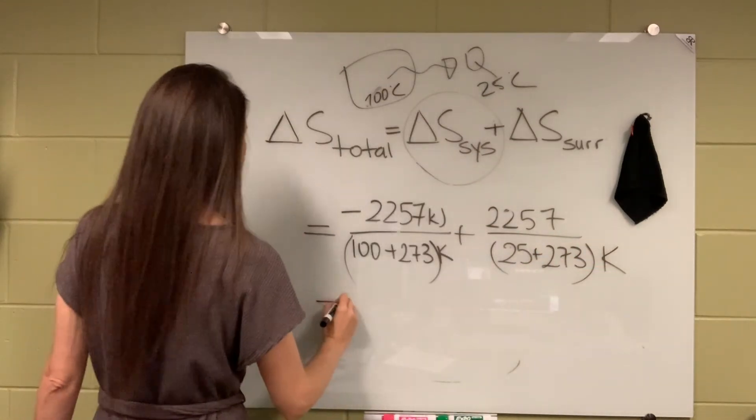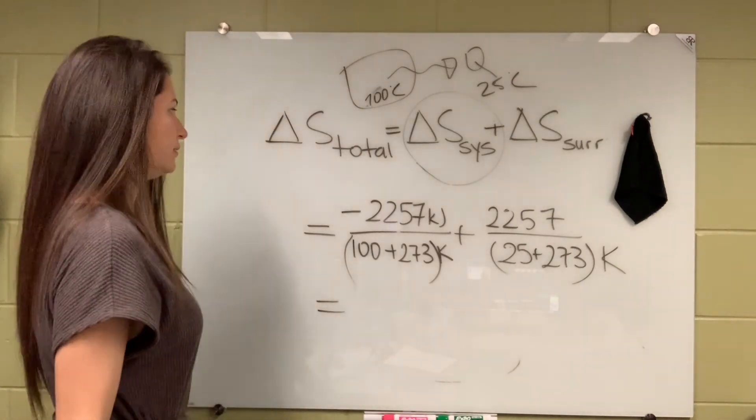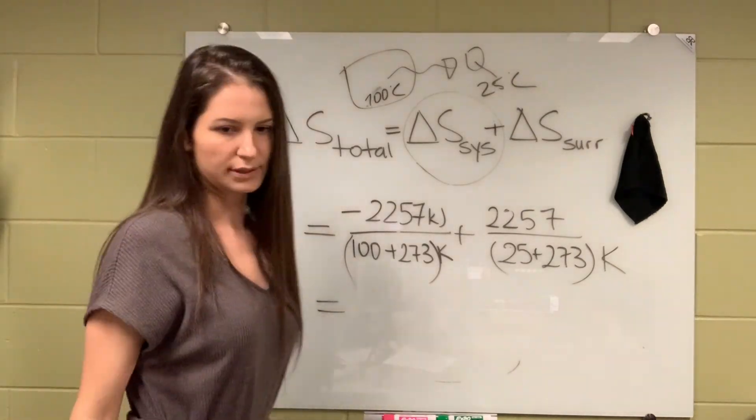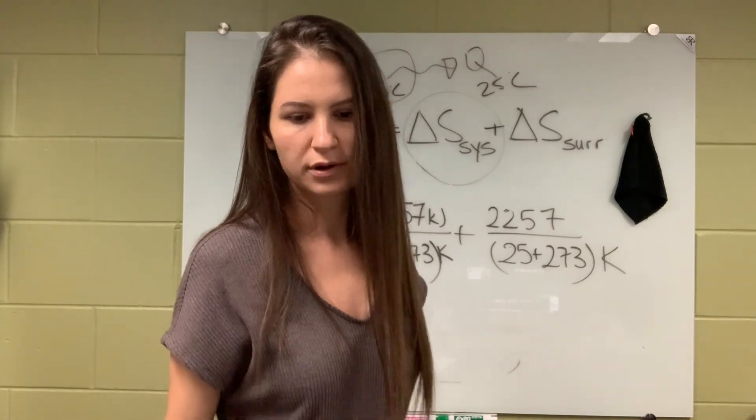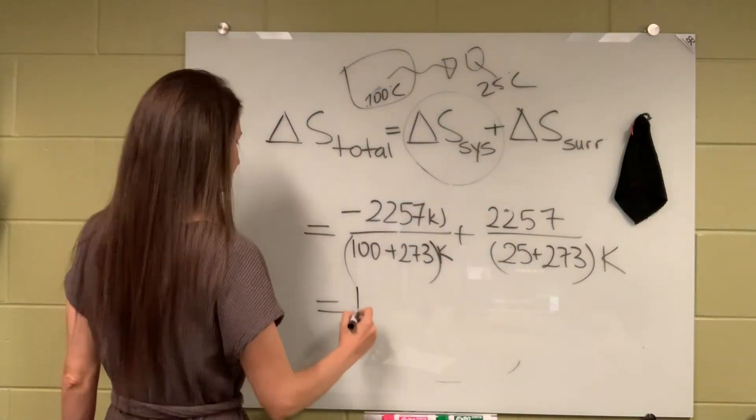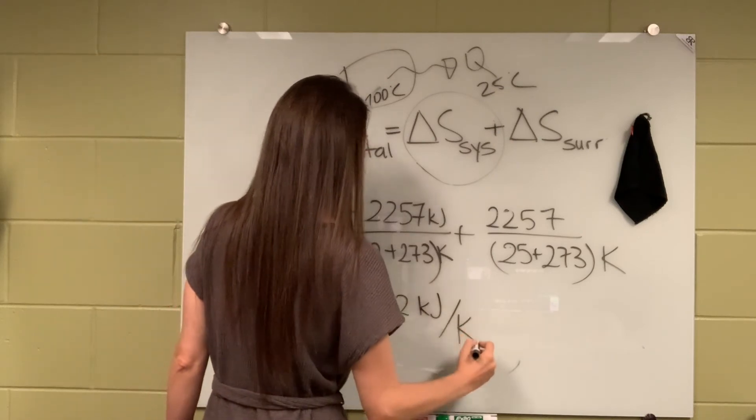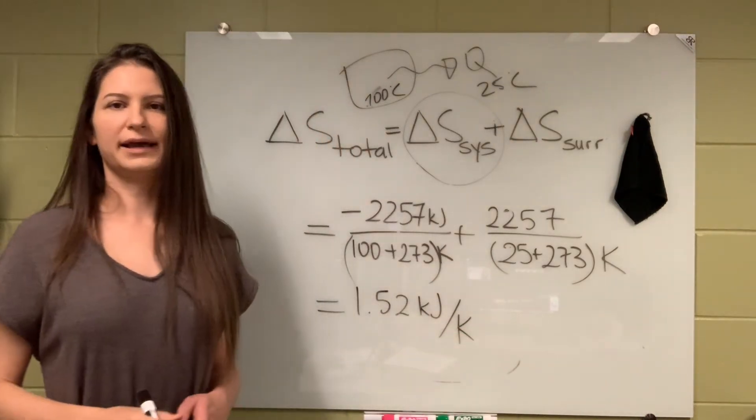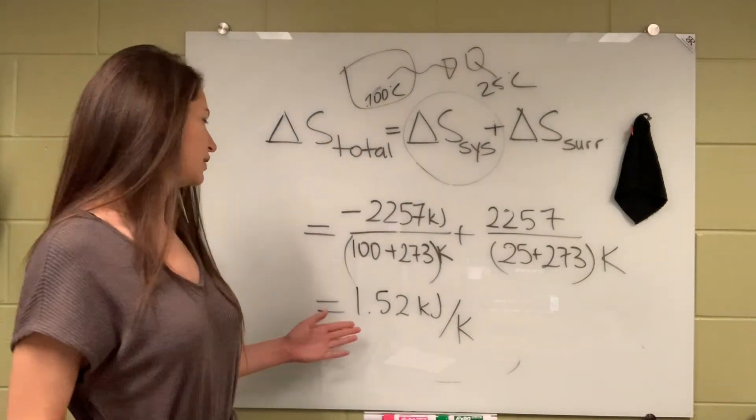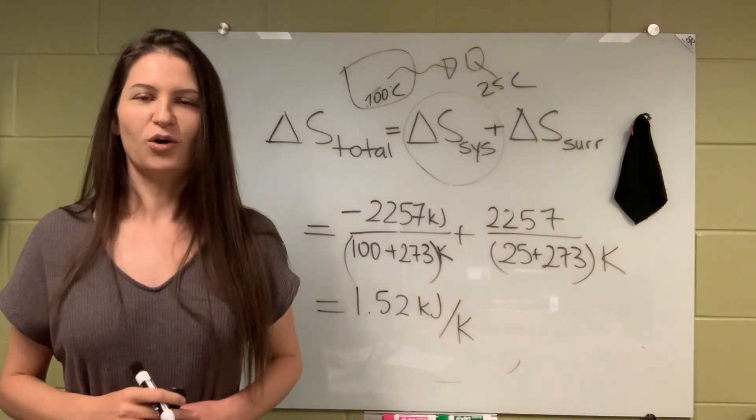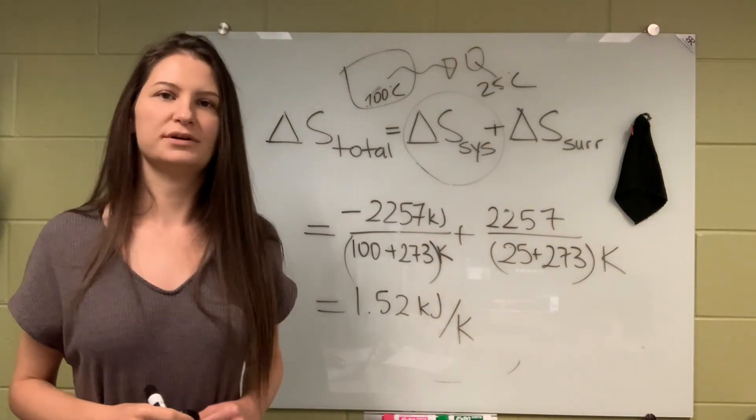And this should give you an entropy change, total entropy change, of 1.52 kilojoules per kelvin. So total entropy change is actually positive.